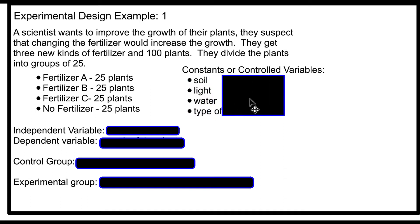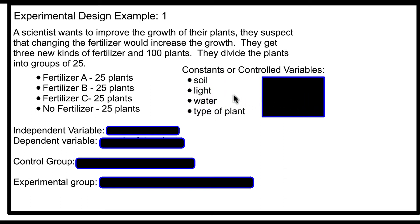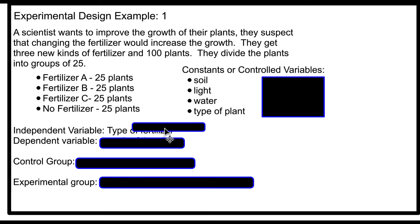Here are a few things that shouldn't change: the same soil, the same light, the same amount of water, and the same type of plant. The independent variable — which is what they're going to ask you on the GED — is what the scientist is testing or changing. In this case, it is the type of fertilizer, which we're calling fertilizer A, B, and C.